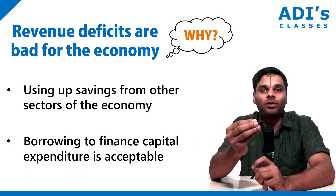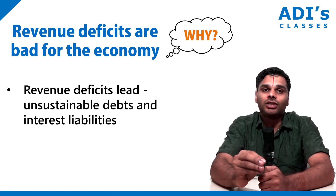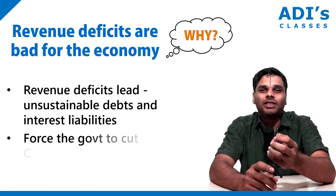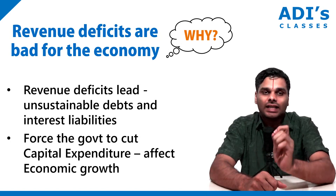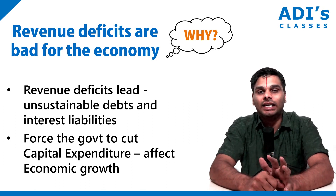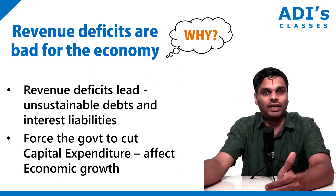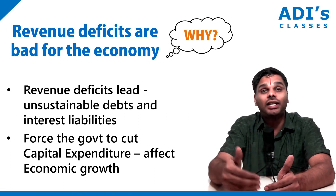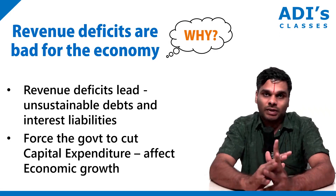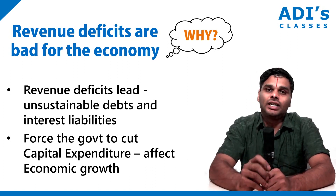Capital expenditure is always good for the economy. But if there is a revenue deficit, that is very bad — it will lead to unsustainable debts and interest liabilities for the government, and force the government to cut capital expenditure, which in turn will affect economic growth. Revenue expenditure has to be planned well beforehand as it is committed expenditure — salaries, pensions, utilities, day-to-day functioning. None of these can be avoided easily. So whenever you take up a revenue expense, you must be certain you can manage it sustainably in the years to come.